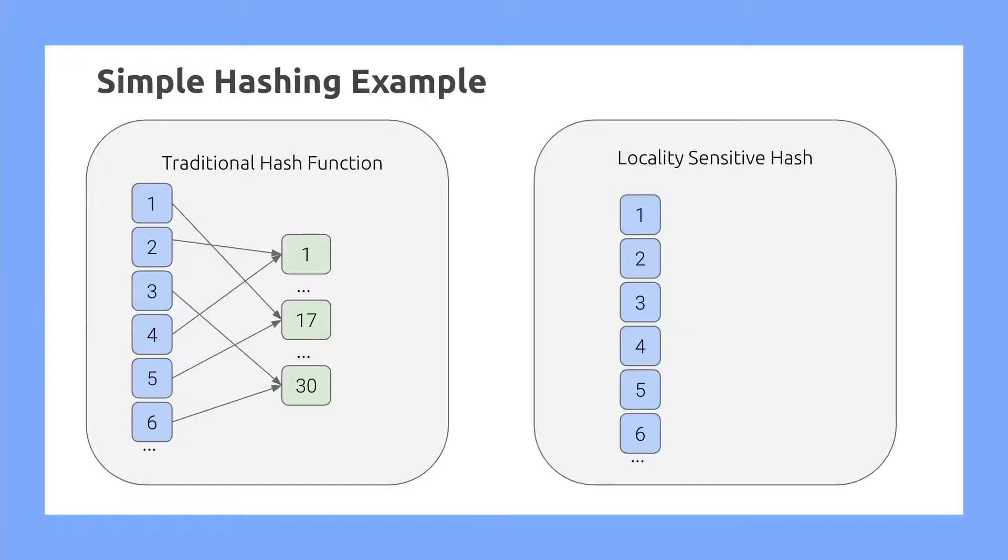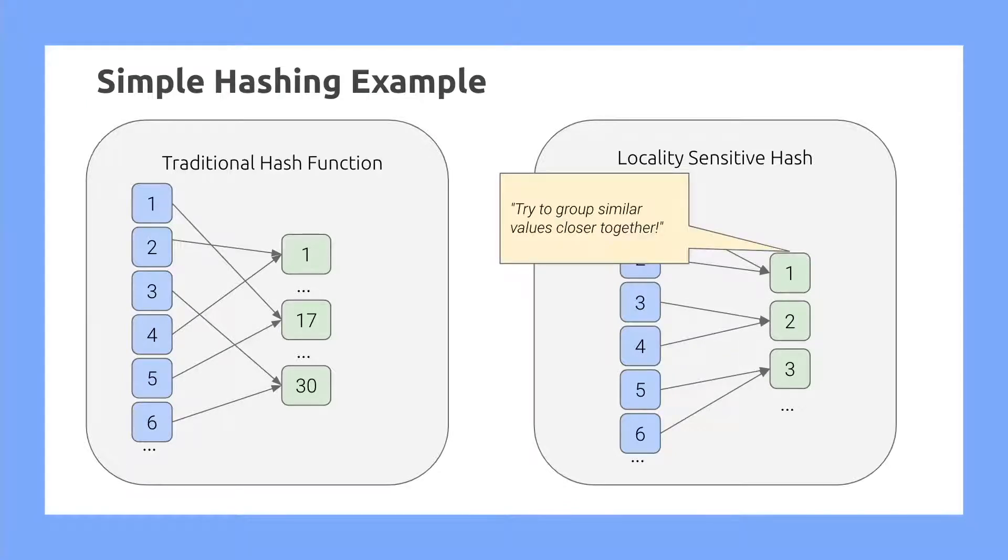Meanwhile, in locality-sensitive hashing, similar keys will map to similar values. So we may get something like this. The key is that we try to group similar values together in locality-sensitive hash functions.